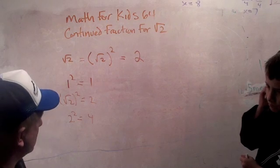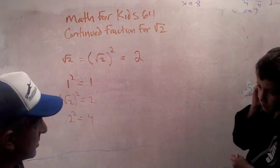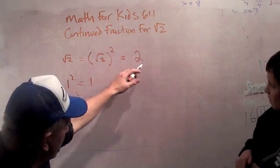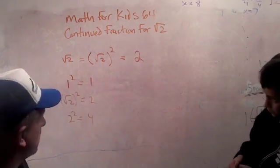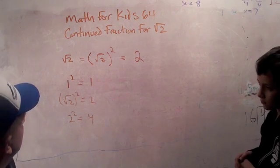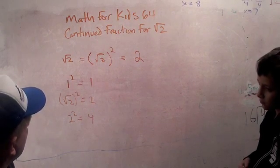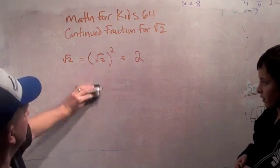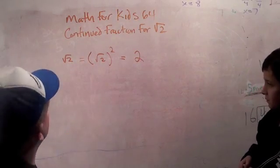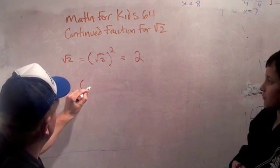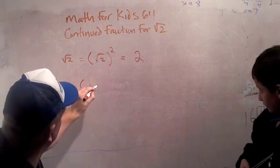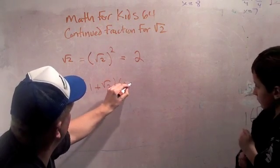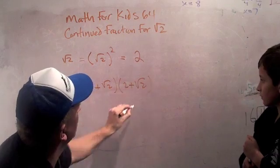Fractions are called rational numbers. Rational numbers are numbers that you can make either with integers or by dividing integers. The square root of 2 is not a rational number. But it does have properties — remember when we talked about i? You can understand some properties, like 1 plus the square root of 2 times 2 plus the square root of 2.